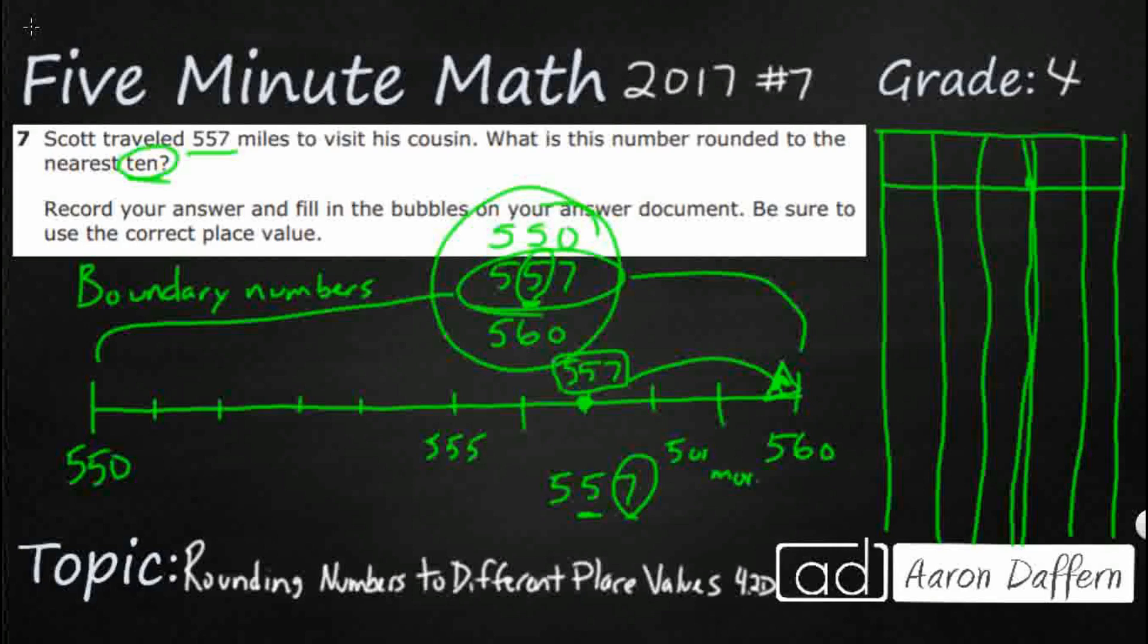And if it's 5 or more, then you're going to round up to the next boundary number. If it's 4 or less, you're going to round down to the lower boundary number. And this 7 is definitely more than 5, so that's going to make that go up to a 560. This digit always, any digit to the right of what you're looking at, always go down to 0.